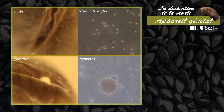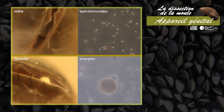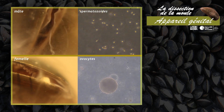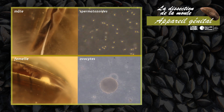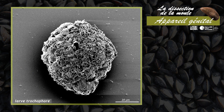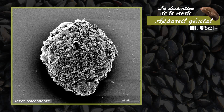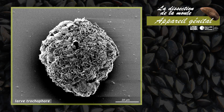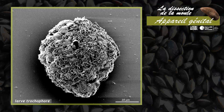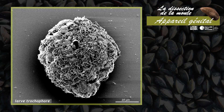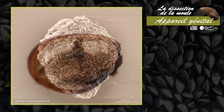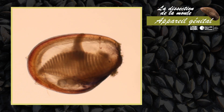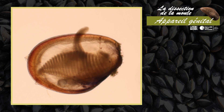La fécondation est externe. Après développement embryonnaire, l'éclosion libère une larve ciliée, la larve trocophore. Celle-ci va mener une vie planctonique et acquérir sa forme définitive après métamorphose.